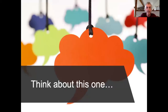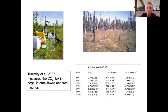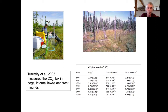Now, I want to give you one example to think carefully about, and you can decide for yourself whether you think this represents an experiment or an observation. In a 2002 study, Toretsky et al. measured the carbon dioxide flux from bogs, internal lawns, and frost mounds. What they did was go out into the field and set up chambers connected to machines to collect air samples and analyze those samples to determine how much CO2 was coming out of the soil in these three scenarios: bogs, internal lawns, and frost mounds. So what I'd like you to do is think about this for yourself — do you think this represents an experiment or an observational study?